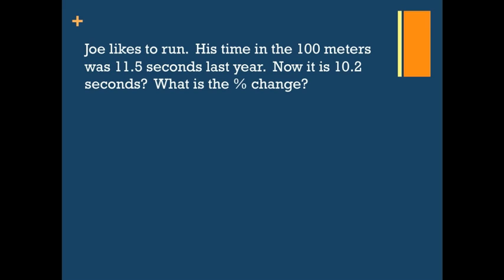Next, we'll take a look at our second example. Joe likes to run. His time in the 100 meters was 11.5 seconds last year. Now it is 10.2 seconds. What is the percent change?